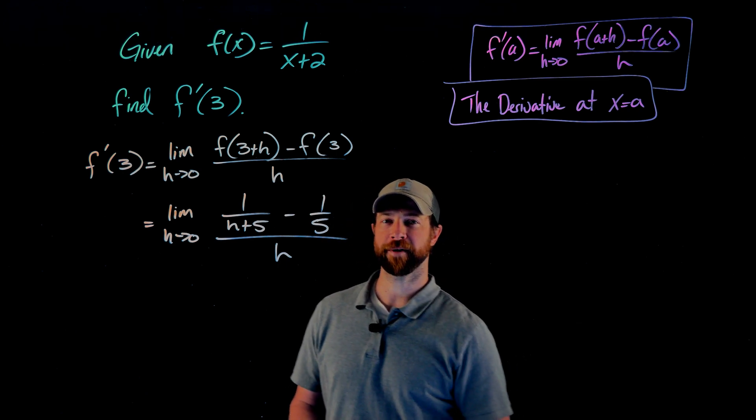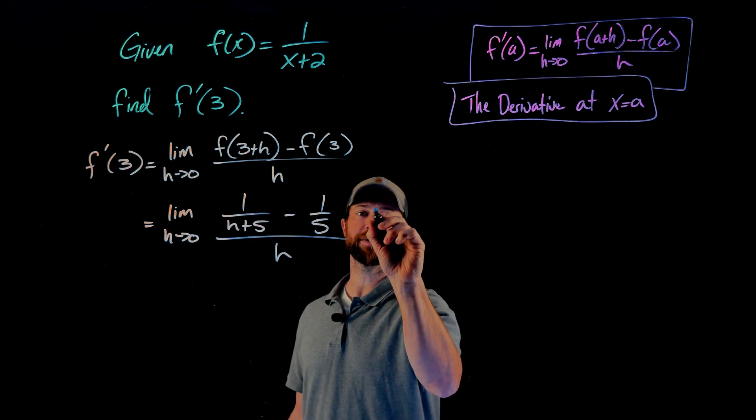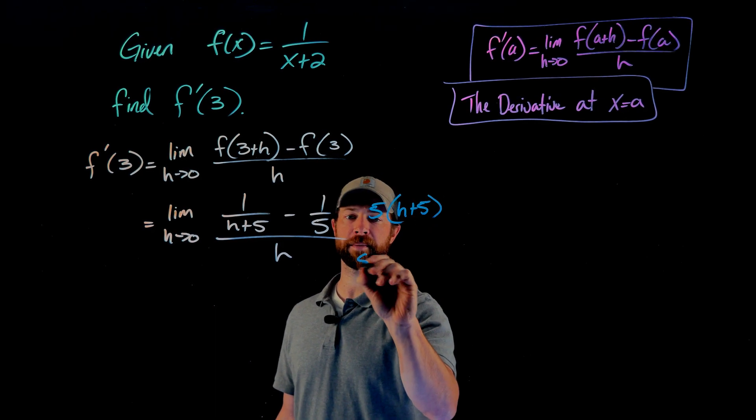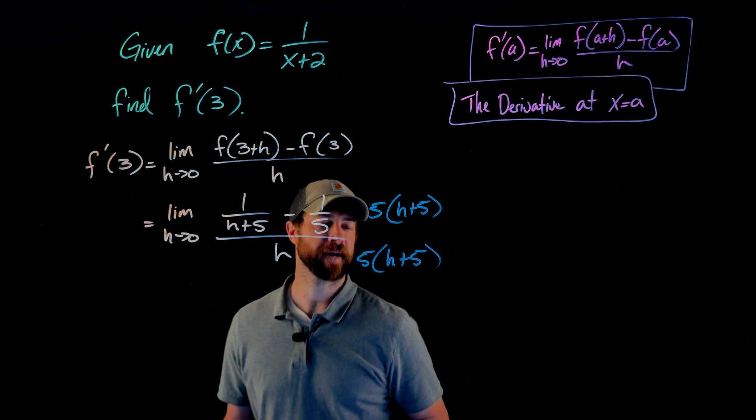That is always pretty straightforward. The LCD I'm going to use is just multiplying these two together. So I'm going to multiply both the top and the bottom here by 5 times h plus 5.